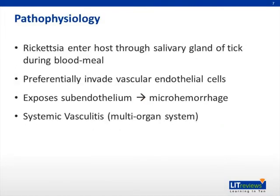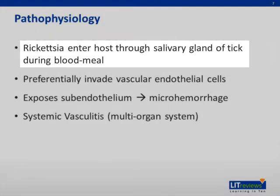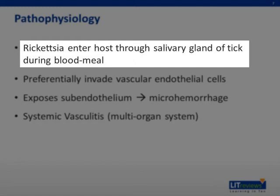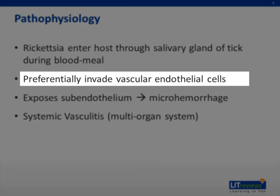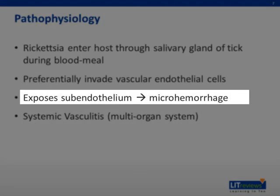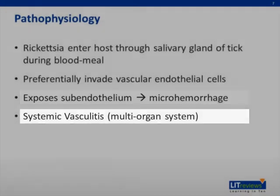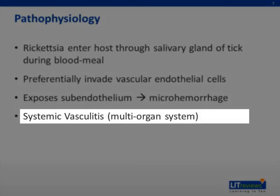When a tick infected with the rickettsia initiates a blood meal on a host, whether a canine or a human, the rickettsia organisms enter that host through the salivary gland of the tick during its meal. These rickettsia will then preferentially invade vascular endothelial cells, thereby exposing the subendothelium and leading to microhemorrhage. The vast array of symptoms seen in Rocky Mountain Spotted Fever are a reflection of the systemic vasculitis caused by this subendothelial microhemorrhage.